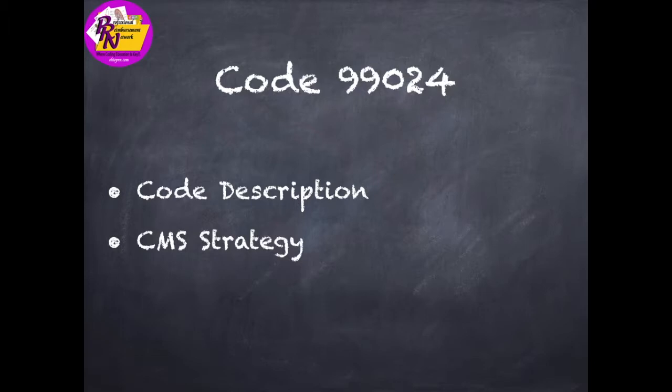They needed additional information, so they decided to expand that strategy and take a look at just using 99024 as the data marker to determine the services that they need to review.